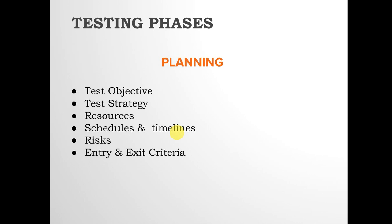Entry and exit criteria are also defined. A tester doesn't begin testing as soon as they receive the build from a developer — they first perform a build verification check to see whether the application is stable enough for testing and whether sufficient test data is available. Exit criteria define what needs to be delivered and achieved before they can exit the testing cycle.